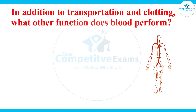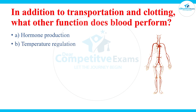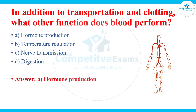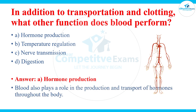In addition to transportation and clotting, what other function does blood perform? The answers are hormone production, temperature regulation, nerve transmission, or digestion. The answer is hormone production — blood also plays a role in the production and transport of hormones throughout the body.